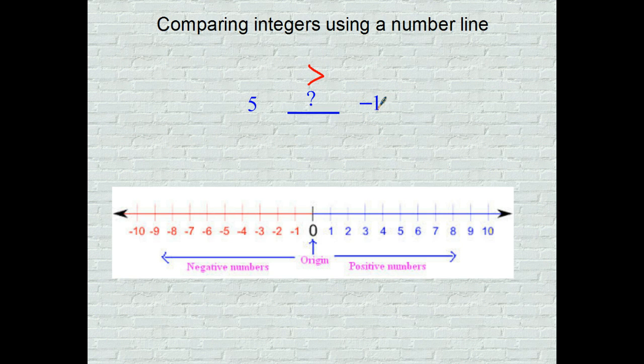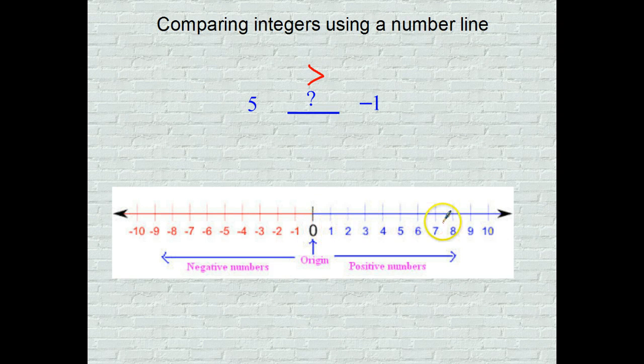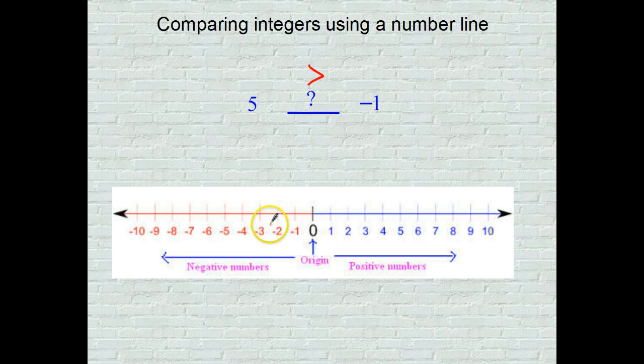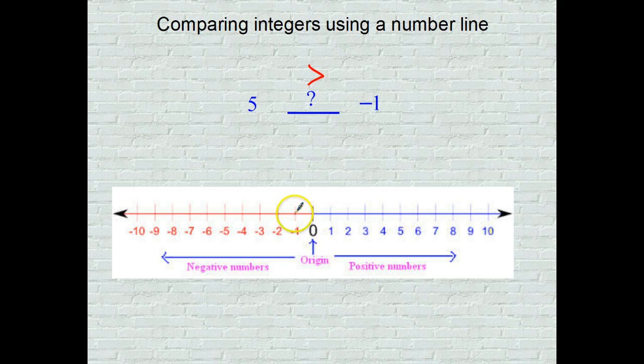Take it to the number line. As you recall, here's your zero or your origin. As you go to the right of zero, the numbers are larger. And as you go to the left, they get smaller. So five located all the way here on the right would have to be greater than negative one who sits to the left of zero.